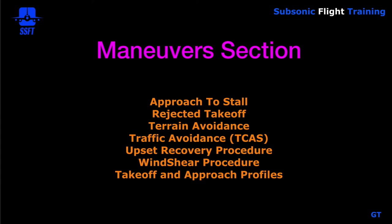The maneuver section has some of the most common maneuvers accomplished in flight training, including approach to stall recovery, rejected takeoff both low and high speed, terrain avoidance, TCAS or traffic avoidance procedures, upset recovery procedure in nose high and nose low conditions, and wind shear procedures on takeoff, departure, arrival, and landing. Takeoff and approach profiles are also listed within the maneuver section.